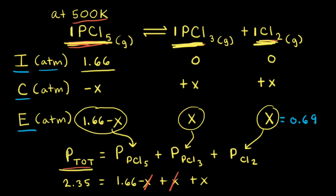So if X is equal to 0.69, the equilibrium partial pressure of Cl2 is 0.69 atmospheres, and the equilibrium partial pressure of PCl3 is also 0.69 atmospheres. And 1.66 minus 0.69 gives us the equilibrium partial pressure of PCl5, which is equal to 0.97 atmospheres.